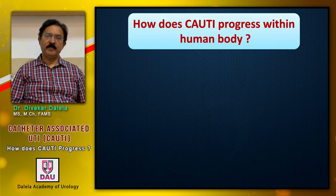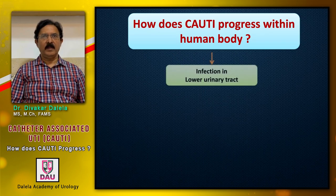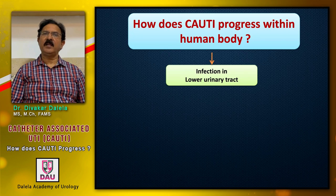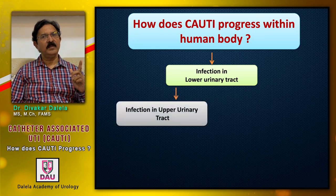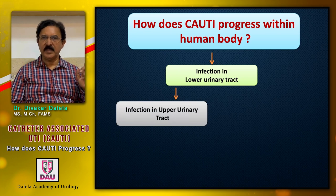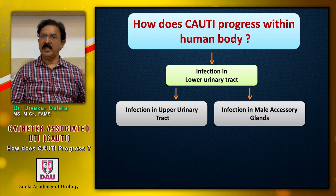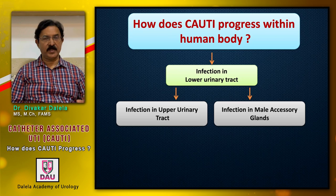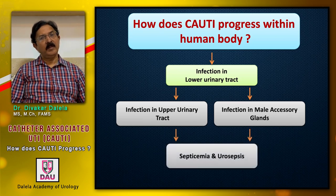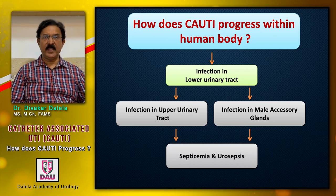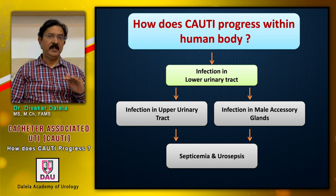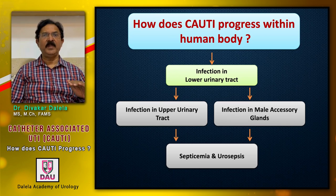How does CAUTI progress within the human body? Infection will first occur inside the lower urinary tract, which means the bladder and urethra. From there, infection can either move into the upper urinary tract — the ureter and kidneys — or it can move into the male accessory glands present around the urethra, the prostate, and the seminal vesicles. If the infection progresses beyond a limit in either territory, it can result in septicemia and urosepsis, and that is why CAUTI can be a fatal infection.